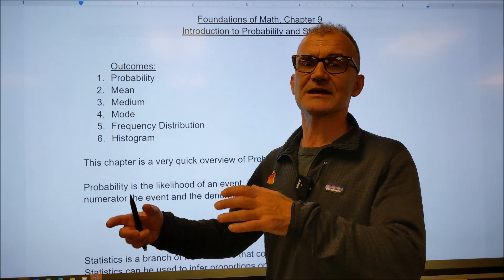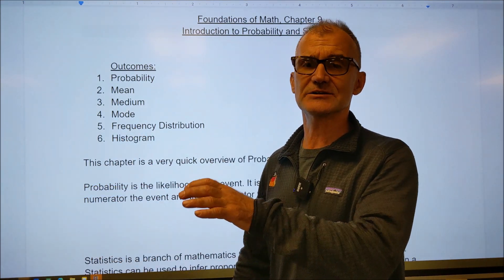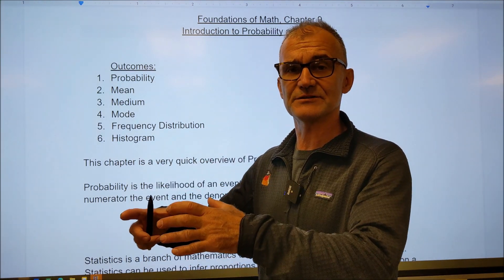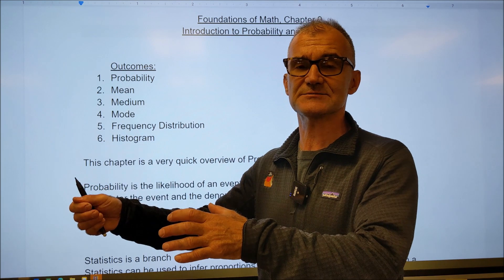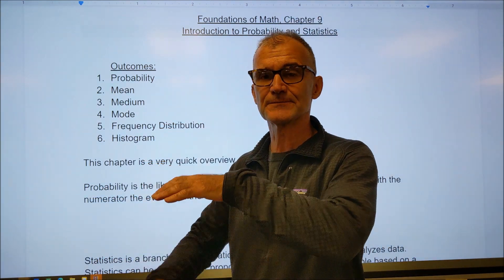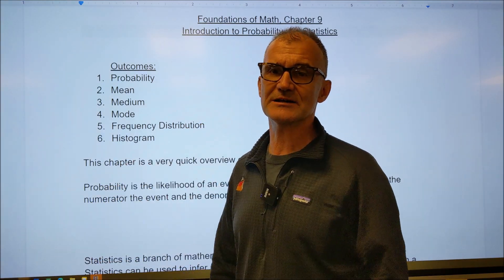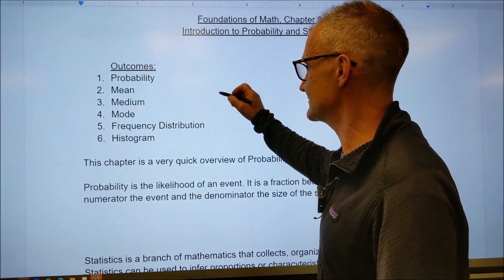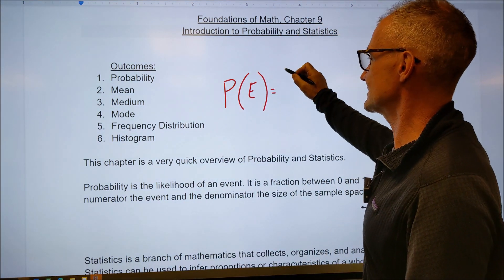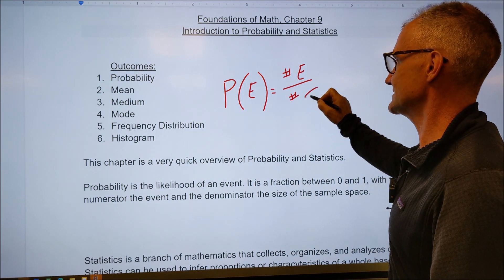The probability of any event always has to be between zero and one. It is a likelihood of that thing happening. So if I'm playing cards, if I have a deck of 52 cards, what's the probability I get the king of spades? Well, there's only one king of spades out of the sample space of 52. So the probability of drawing randomly a king of spades is one out of 52.